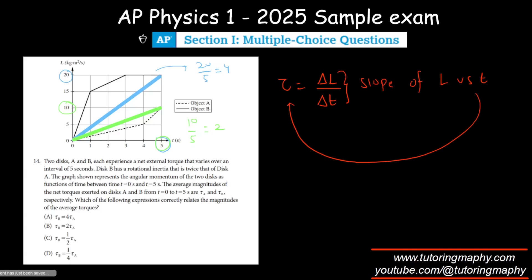Clearly the torque of this one, which is B - the solid line is B - so this is torque B, this is torque A. So torque B is 2 times torque A, which is option B.